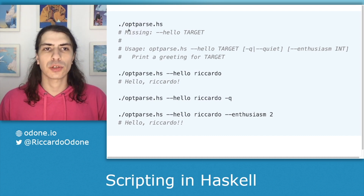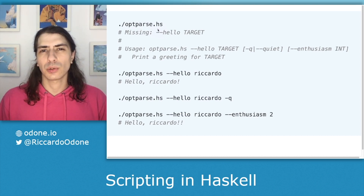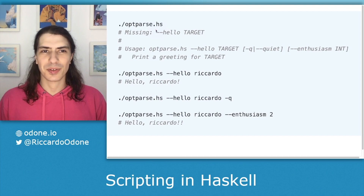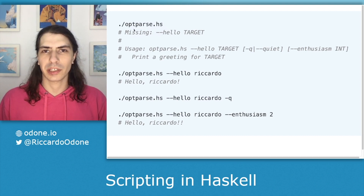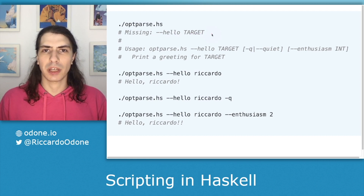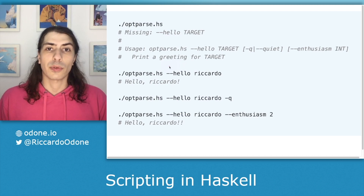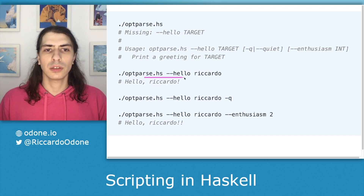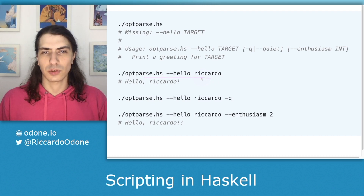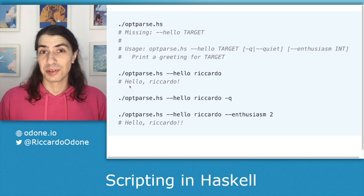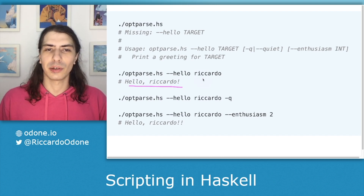So we have a Haskell script here, which is called optparse.hs. Here we can see how it behaves by trying a few random things. First of all, we call the script without any arguments, and we see that we get back an error message explaining how to use the script. So then we see that the hello argument was missing. On the next call, we call the script again with that argument set to my name, and the script prints out: Hello, Ricardo.